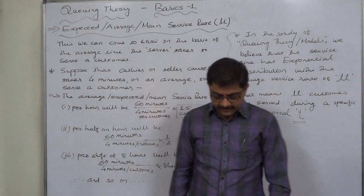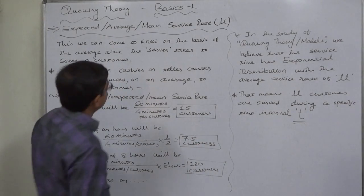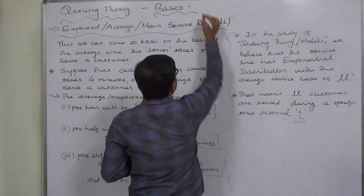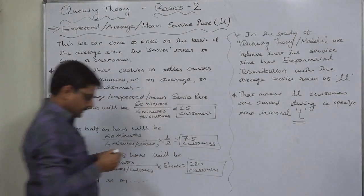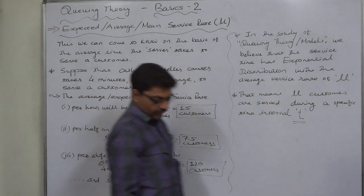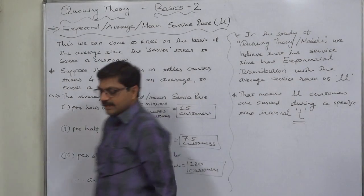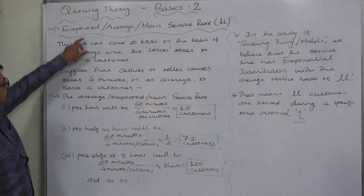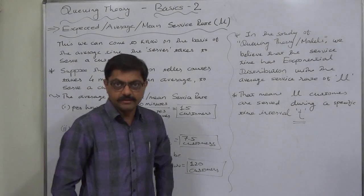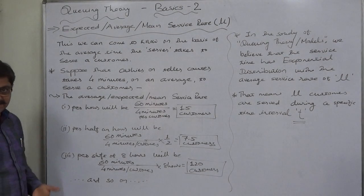Hello and welcome friends. In the next lecture in queuing theory, we are going to discuss another important point in our discussion on basics of queuing theory — the expected, average, or mean service rate. This is also known as capacity to serve.